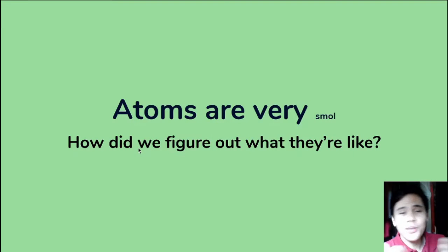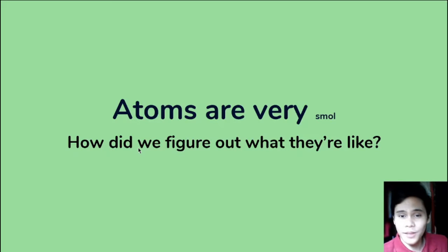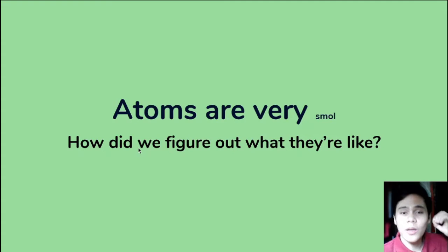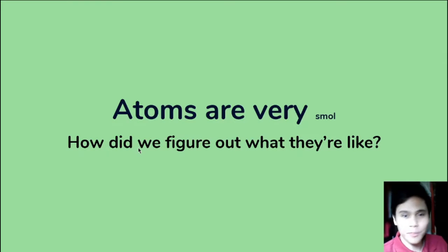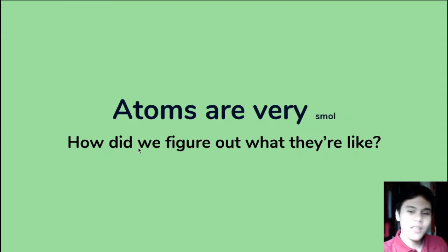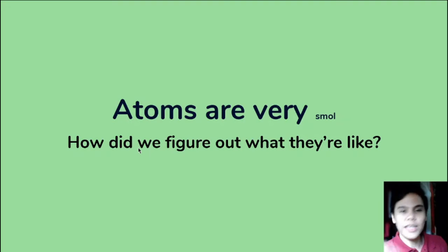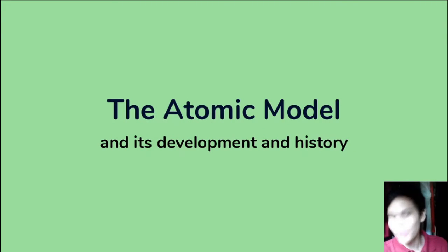What's up science fam? By now you should already know that everything in this universe is made up of matter. And matter has the basic fundamental unit called the atom. And atoms are super tiny. So what brilliant mad mind was able to think of the concept of the atom? My name is Sir Ramon and this is Science with Sir Ramon. For this topic, we're going to talk about how the atom concept developed through the ages — the history of the atomic model.